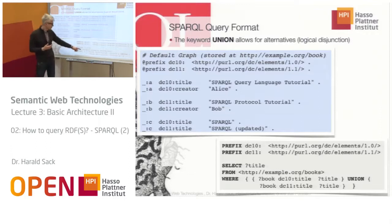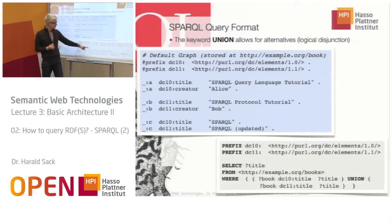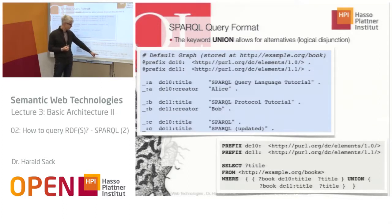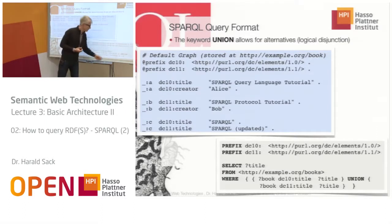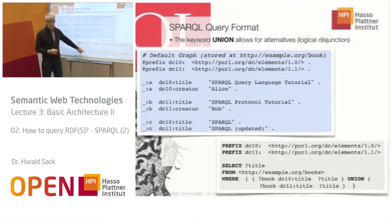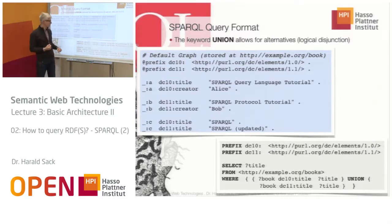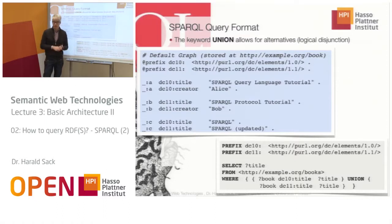In the WHERE clause, you have two different graph patterns — one based on DC 1.0 and the other on DC 1.1 — combined via the UNION keyword. Each individual graph pattern (which can contain more than one triple) must be enclosed in curly braces. All patterns complying to either graph pattern are selected — it is a set-based union.